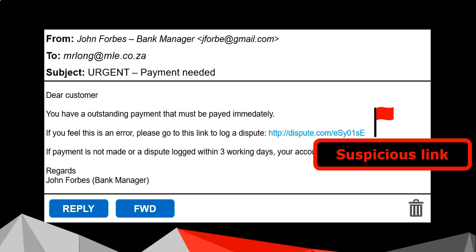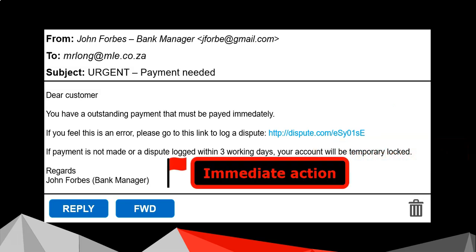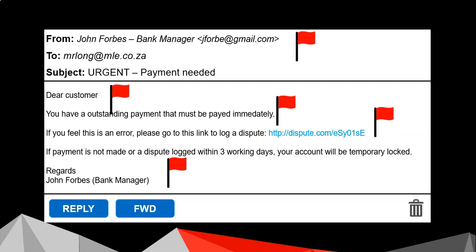Links tend to be associated with dangerous activity on the internet, so I would be very suspicious of this link. And the last one: immediate action — they are trying to put pressure on us to do something and not give us time to confirm the information, which is also very suspicious. So there are the five — did you get them all? This is a very suspicious email and we don't think it's coming from the actual bank manager.